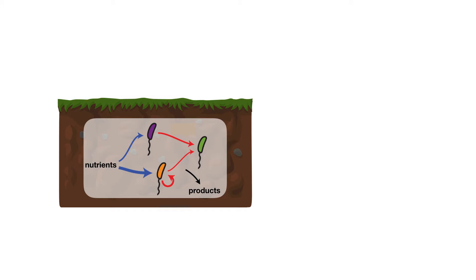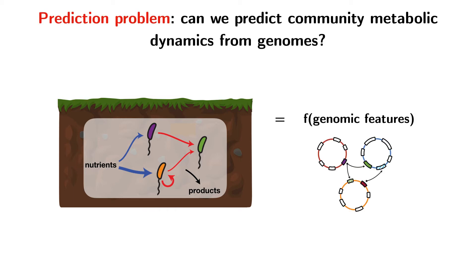For example, the quantitative fluxes of nutrients through that community. So in order to build some understanding, I'd like to pose the following prediction problem: can we predict community metabolic dynamics from genomes? Can we predict the quantitative fluxes of nutrients through a community as a function of the genomic composition of that community?